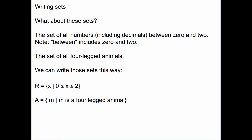What do we do about sets like these? The set of all numbers, including decimals between 0 and 2, and the set of all four-legged animals — those are pretty big sets. As a matter of fact, the first one is infinite. And instead of writing out all of the numbers, which we really can't do, or writing out all four-legged animals, which is really hard to do, we can write those sets a different way.